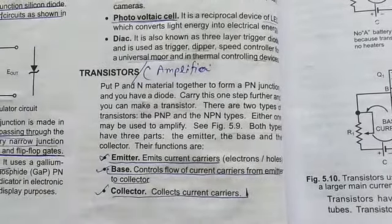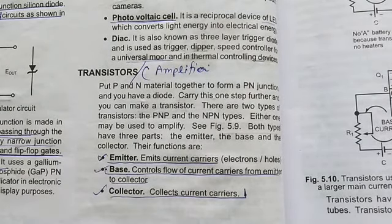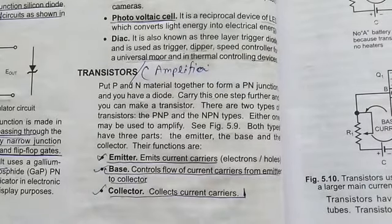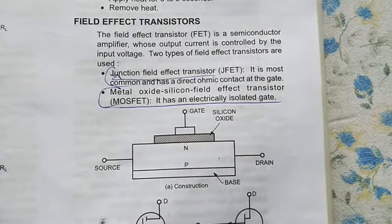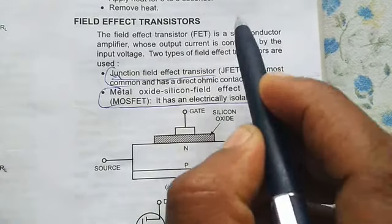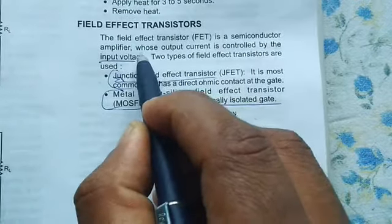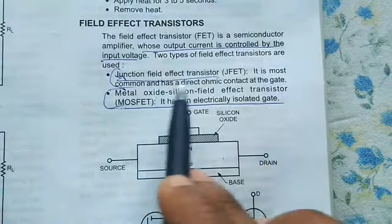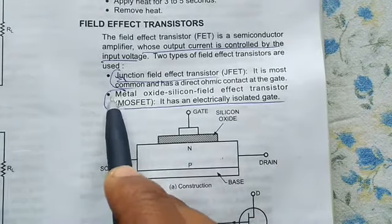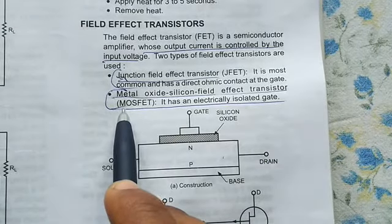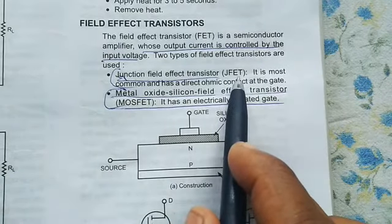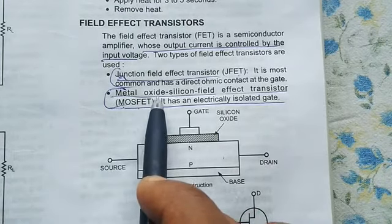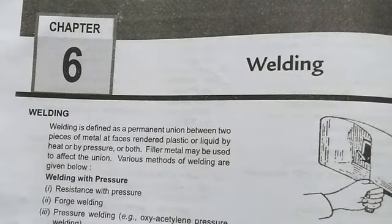Transistors are basically used to amplify current. There are two types of transistors: PNP and NPN, and they have three parts — emitter, base, and collector. The field effect transistor (FET) is a semiconductor amplifier whose output current is controlled by input voltage. Two types are: JFET (junction field effect transistor), which has direct ohmic contact at the gate, and MOSFET (metal oxide silicon field effect transistor).